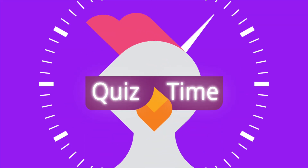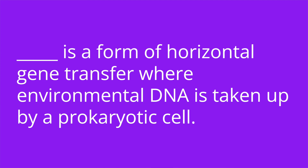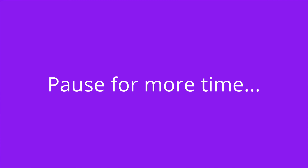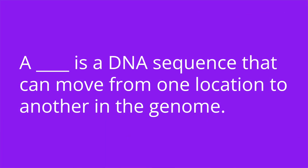All right, it's quiz time. I have three questions for you. Question one: blank is a form of horizontal gene transfer where environmental DNA is taken up by a prokaryotic cell. The answer is transformation. Question two: the blank is a thin tube-like appendage used to transfer genetic information from one cell to another. The answer is the F-pilus or conjugation pilus. Question three: a blank is a DNA sequence that can move from one location to another in the genome. The answer is transposon.